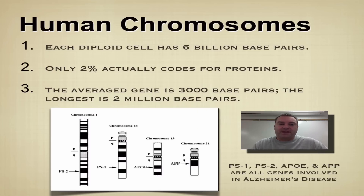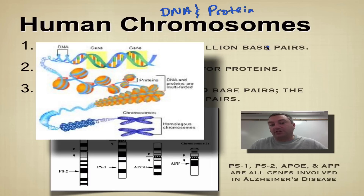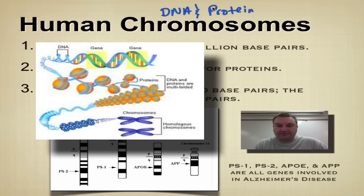So let's get started. Human chromosomes — remember, a chromosome is made out of DNA and protein. And remember that protein is in the form of histones. So you've got your nucleosomes, your histones, etc. You put those two together — that's called chromatin.